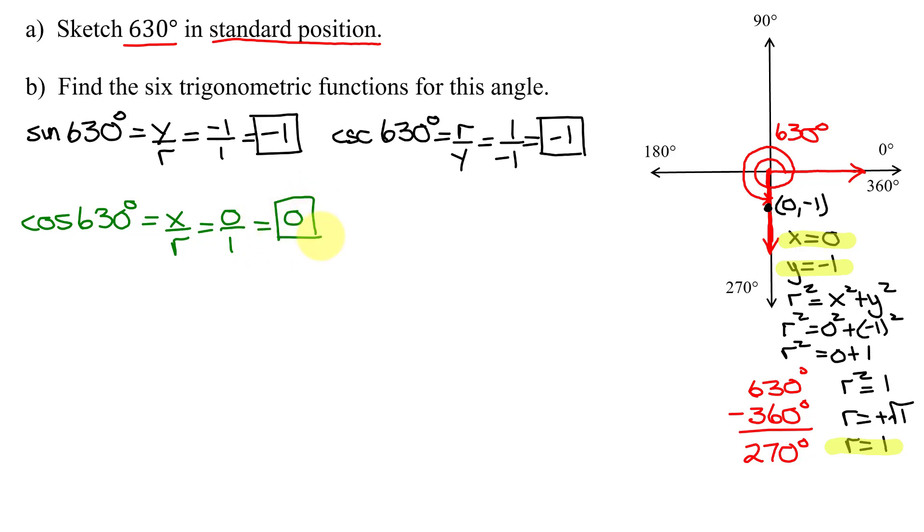The reciprocal of the cosine function is the secant function. So the secant of 630 degrees is going to be the reciprocal of that. So it's going to be r over x, r is 1, and x is 0. 1 divided by 0 is undefined. So the secant of 630 degrees is undefined.